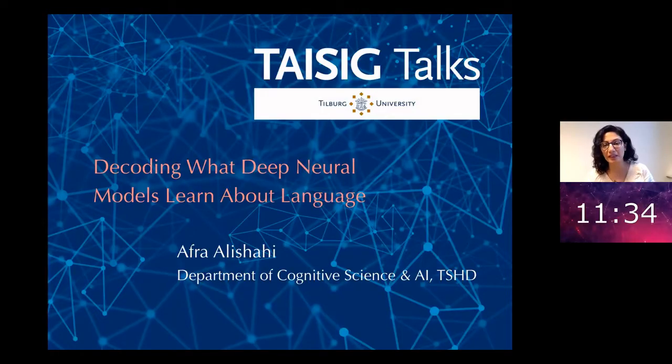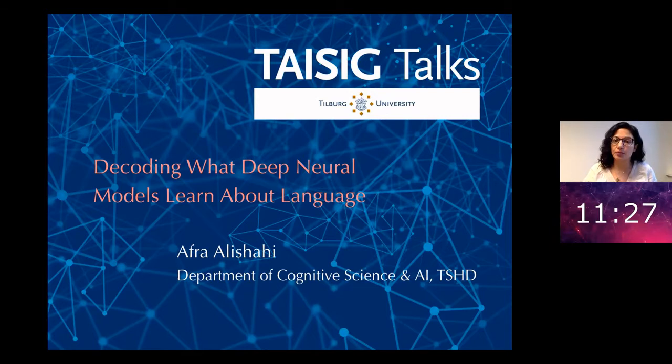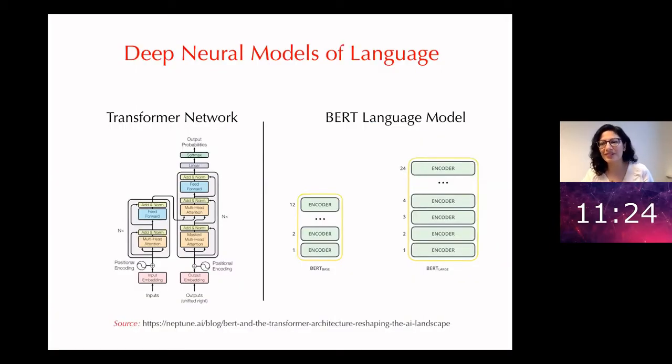What I want to talk about today is not necessarily language learning, but decoding what deep neural models learn about language. As I'm sure all the audience here knows, deep neural network models are everywhere. In any domain of artificial intelligence, machine learning, data science, when there is enough data and enough examples of a particular task, you see traces of neural network based models that learn patterns from these large data sets. The domain of language and speech processing is no exception.